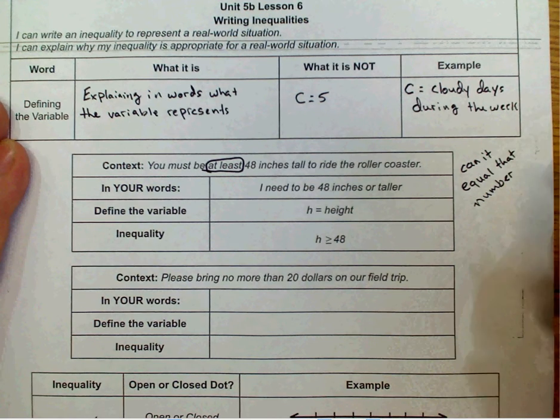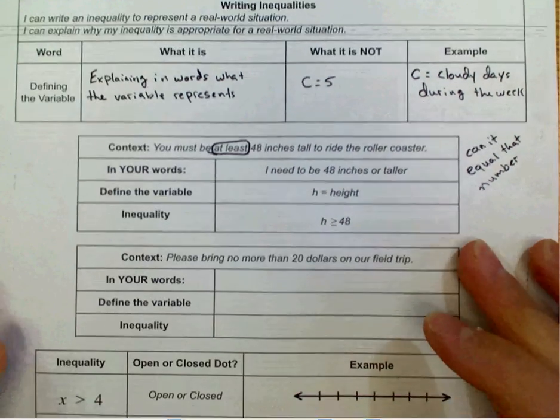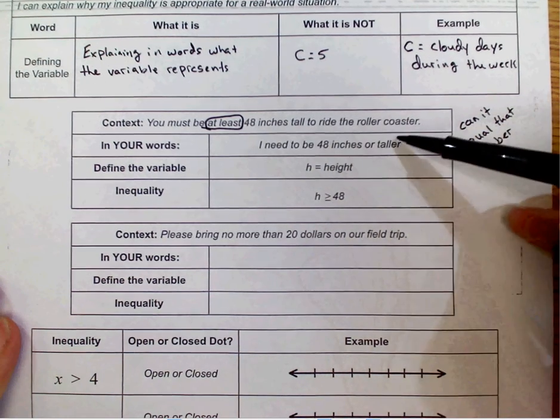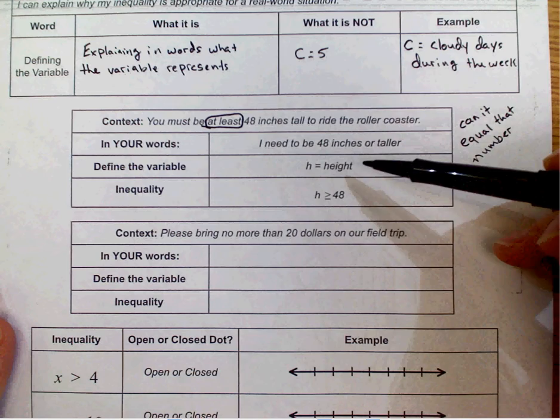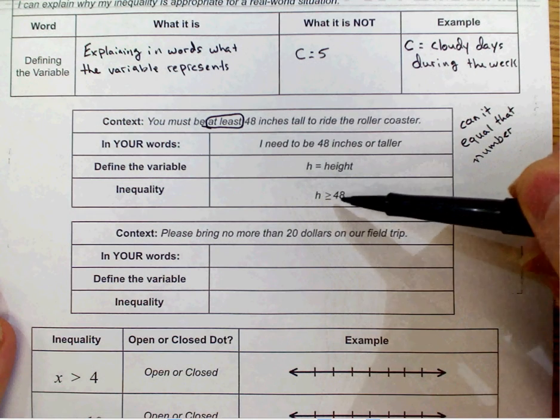So when I say at least, that means I can be 48 inches tall. So Mrs. Heisler barely makes it on the roller coaster. So you need to be 48 inches or taller. Our variable is H equals the height, and our inequality is H is greater than or equal to 48.